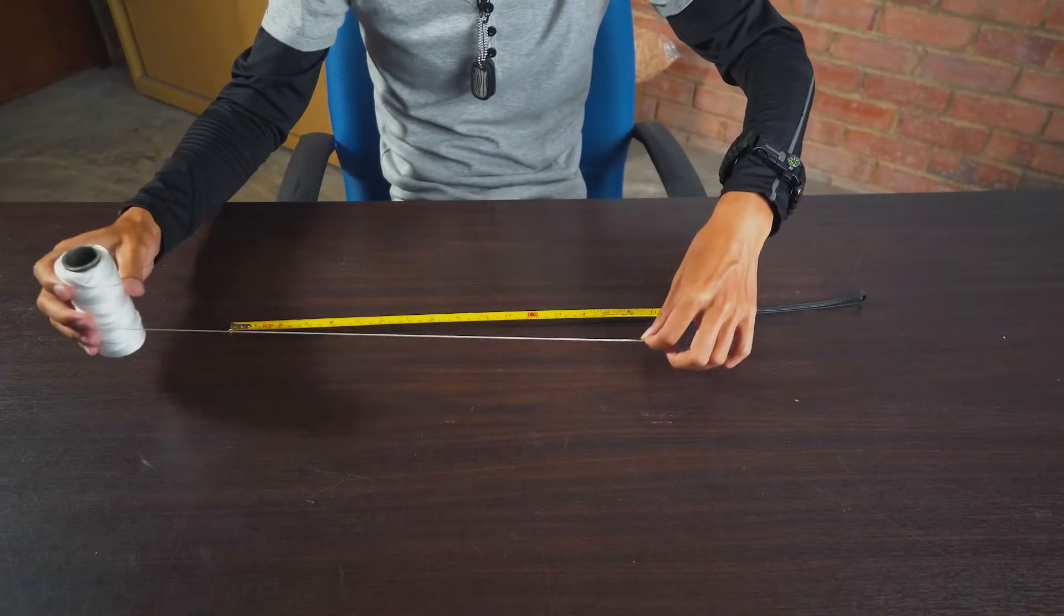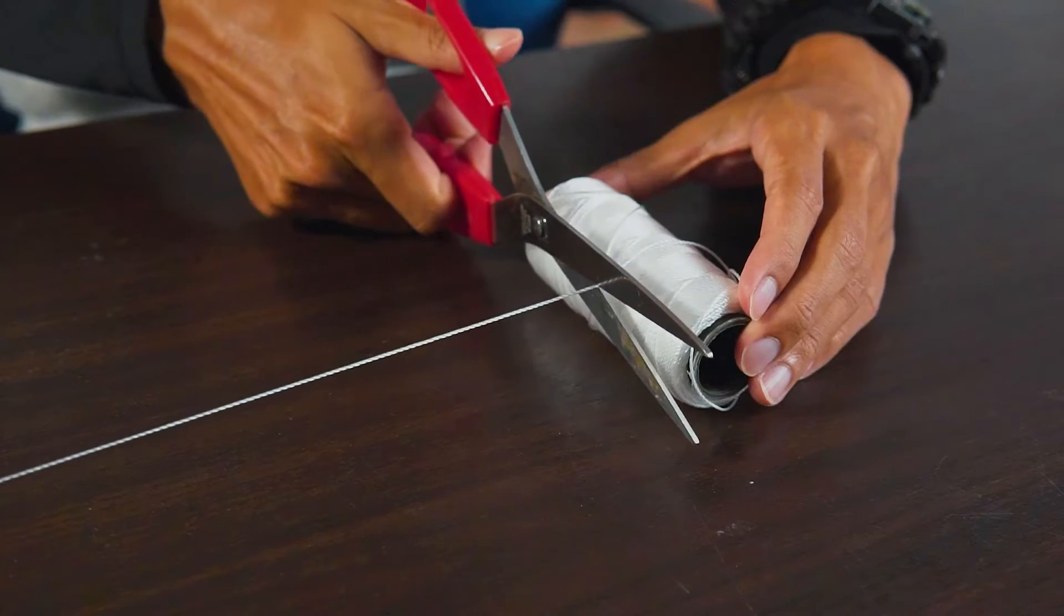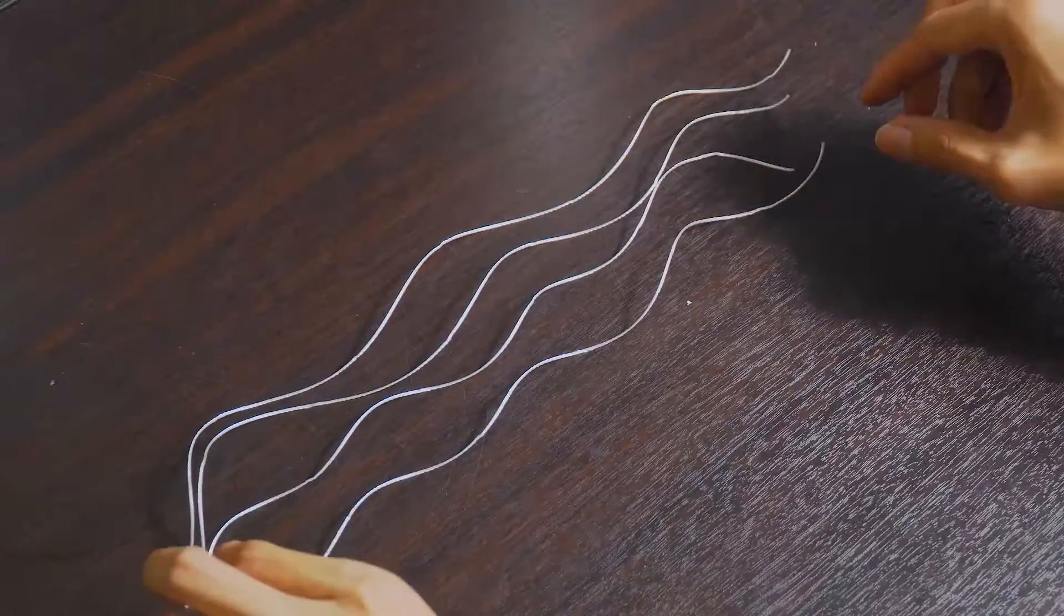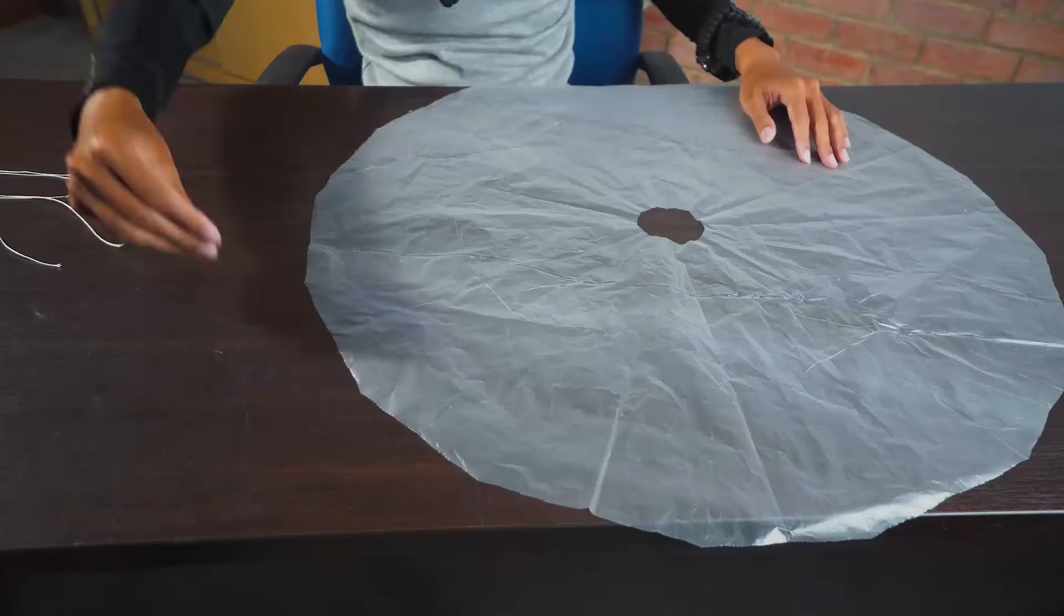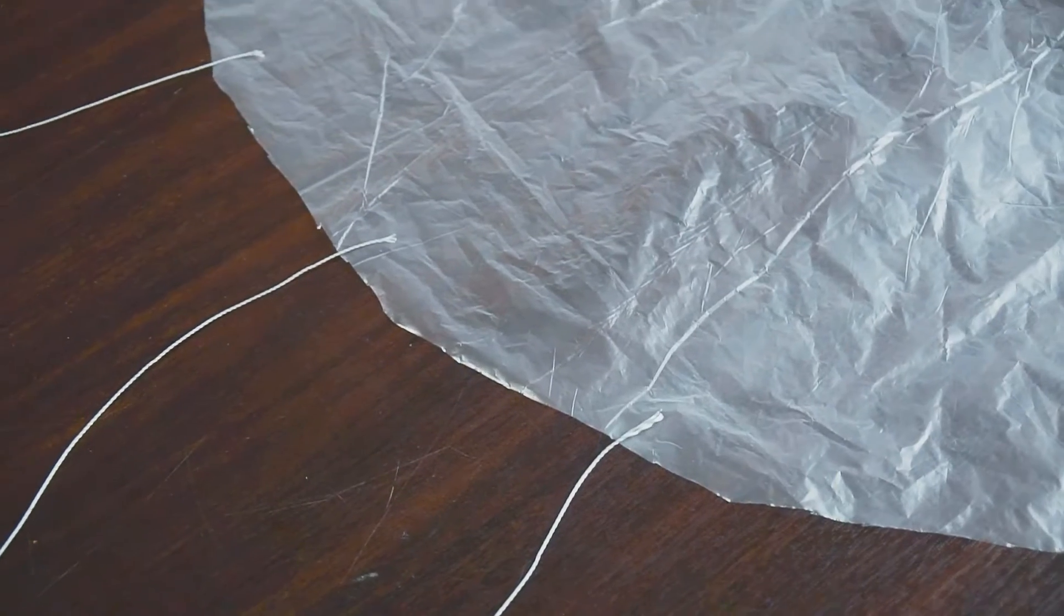Next, you will need to cut out strings of exactly 40 cm in length. Experiment with different numbers of strings and see what works for you. Lay them out evenly in equal distances around the fully opened parachute.